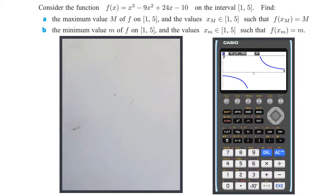and the values x_M in [1, 5] such that f(x_M) = M. We also need to find the minimum value m of f on [1, 5], and the values x_m in [1, 5] such that f(x_m) = m.